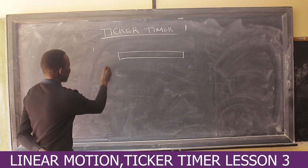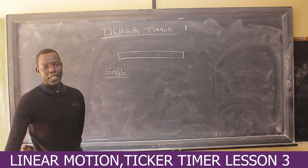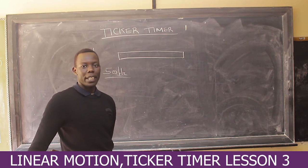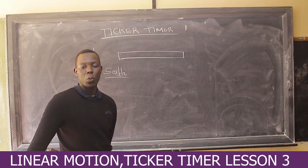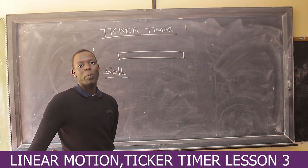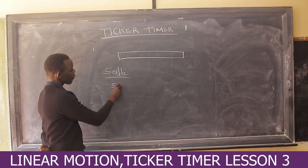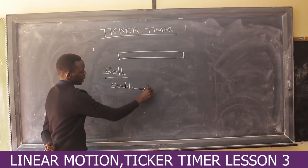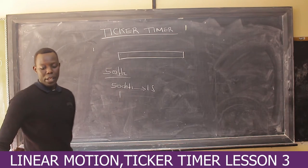If a ticker timer has a frequency of 50 Hz, we need to interpret this. What do we mean by a frequency of 50 Hz? It means the timer can make 50 dots per second. So the question is: in one dot interval, what will be the time?